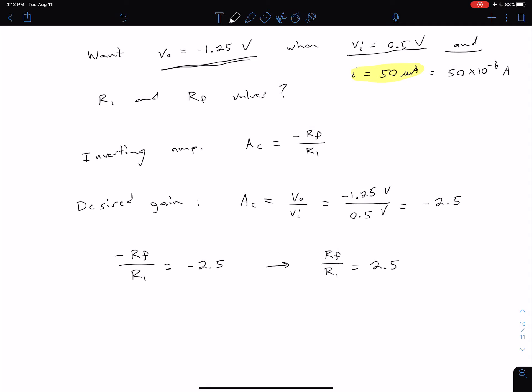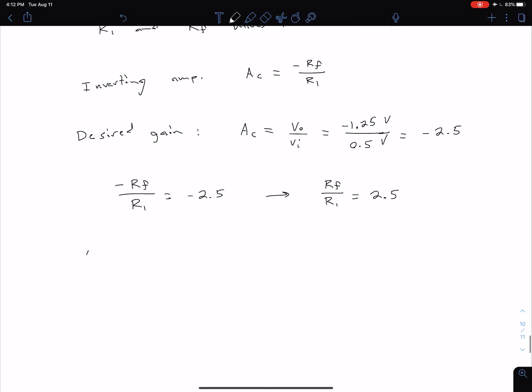But in this case, we have this I value, which is essentially setting the value of our R1 resistor. So our current is essentially setting the R1 value.